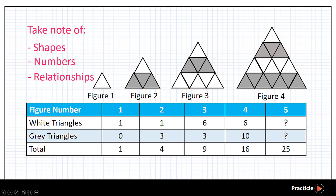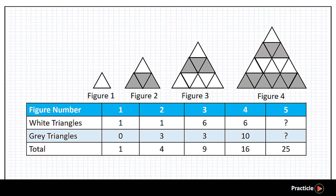Now let's look at the numbers we have and see what relationship we can find. So what are we given? We have the figure number, the number of white triangles, the number of grey triangles, and the total number of triangles for each figure. The easiest relationship that we can find will be between the figure number and the total number of triangles. Looking at these numbers — 1, 4, 9, 16 — you should be able to tell that they are square numbers.